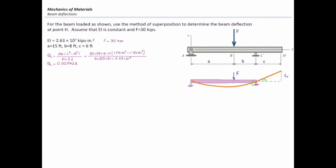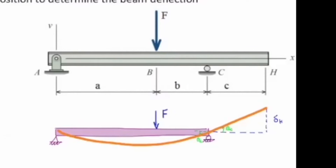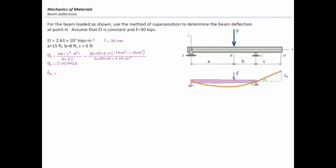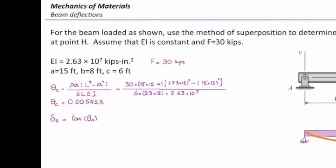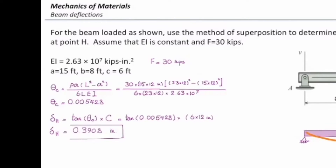Once I determine this angle, I can find how much the total deflection is at the right end. I can say tangent of theta equals delta H divided by the length from C to H, which is C. C in this case is 6 feet, so delta H equals C times tangent of theta. Tangent of this small angle times 6 times 12 inches gives me a total deflection at the right end equal to 0.3908 inches, and that goes upward.